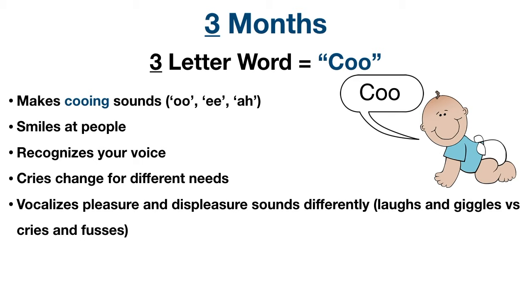They cry differently for different needs — for example, hungry versus tired. They also vocalize pleasure and displeasure sounds differently: they laugh and giggle to communicate happiness, and cry and fuss when upset. Remember that these are average time frames and some milestones can occur sooner or later, but these are the time frames that may come up on medical exams.